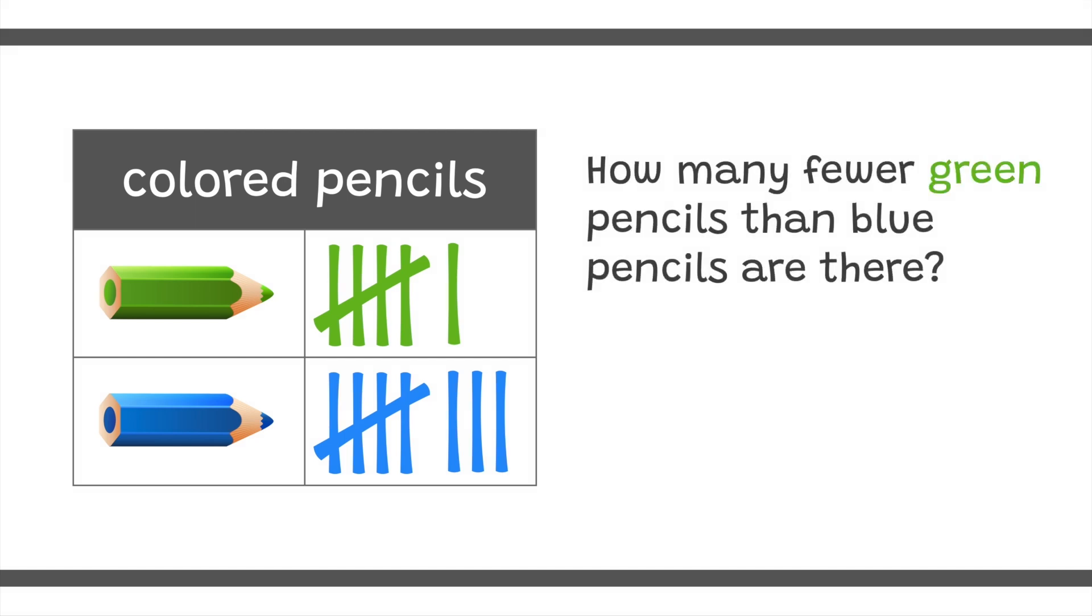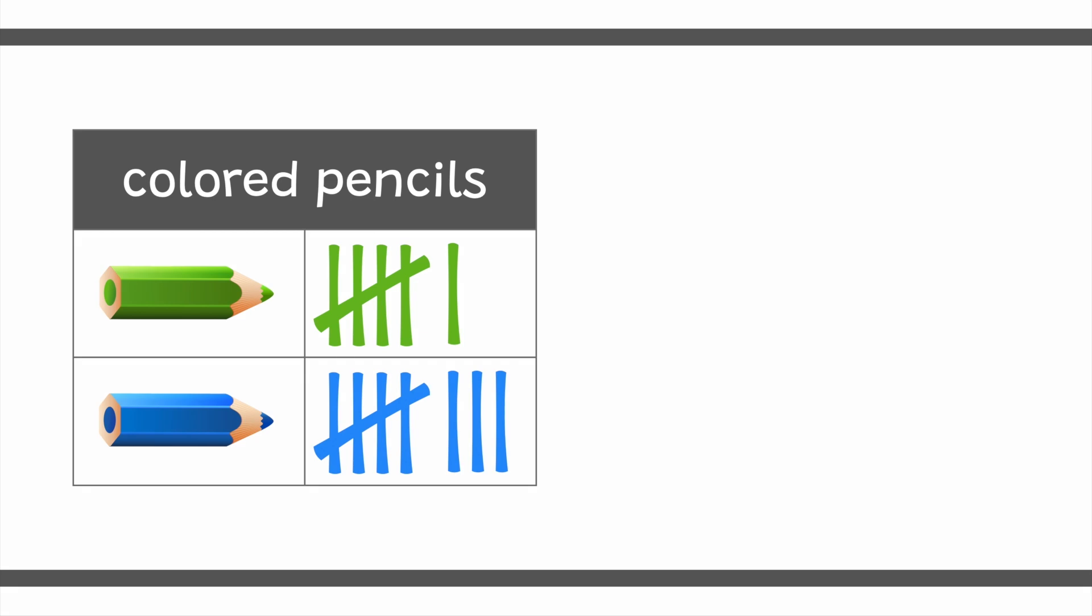How many fewer green pencils than blue pencils are there? Let's find out. To do that, we can compare the tallies. We'll find all the matching tallies in both rows, then count the extra tallies in the blue row. Both colored pencils have a bundle of five, and both have one more. There are two more tally marks in the blue row. That means we need two more green pencils to have the same amount. So there are two fewer green pencils than blue pencils.